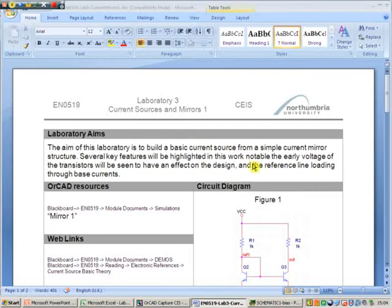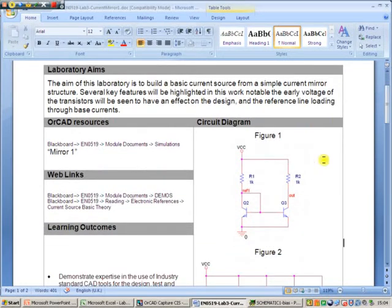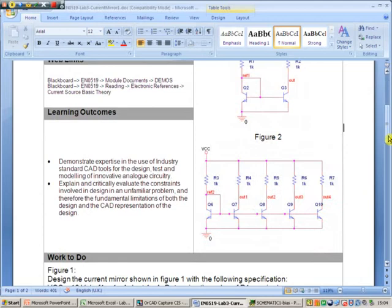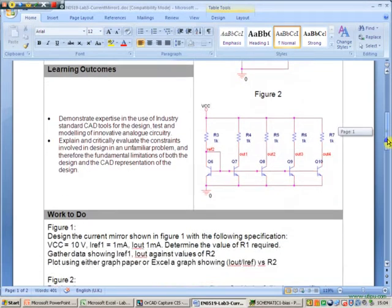This is laboratory three. Laboratory three is a break from amplifiers and we're moving on to current sources. We're going to look at figure one, which is a basic current reference cell, and then figure two, how we can have multiple output.